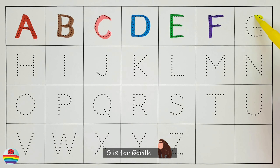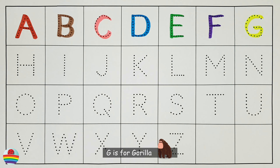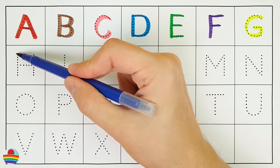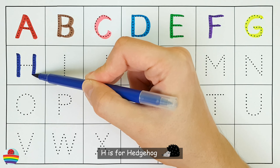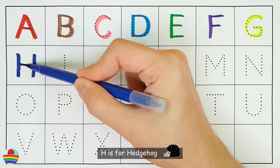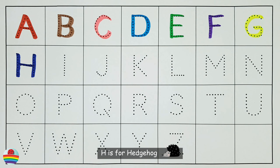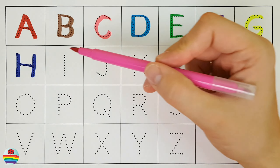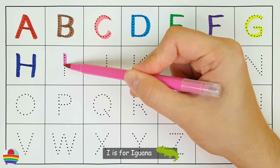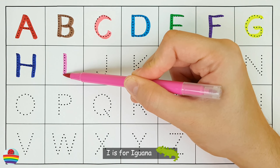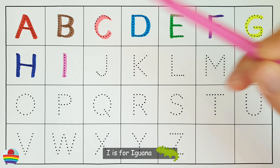G. G is for gorilla. G. H. H is for hedgehog. H. I. I is for iguana. I.